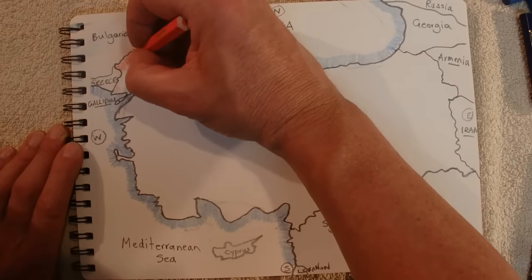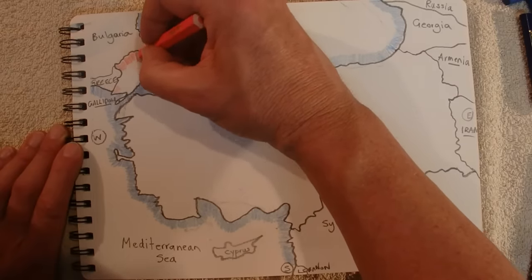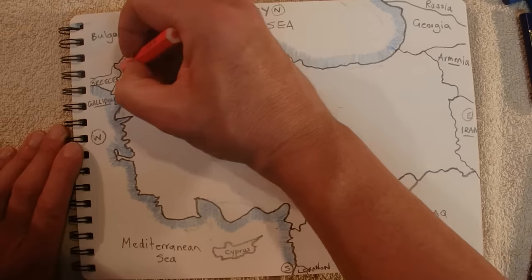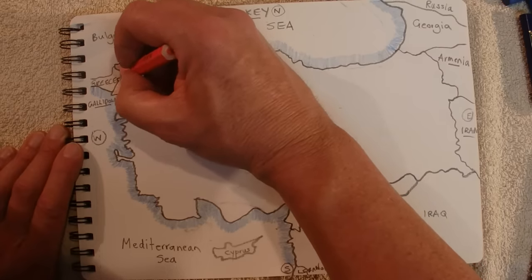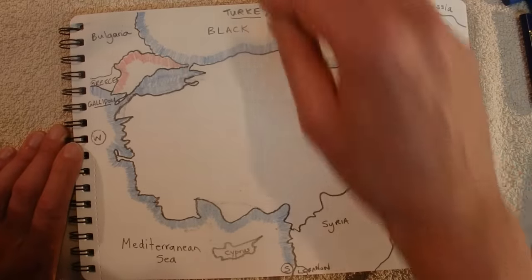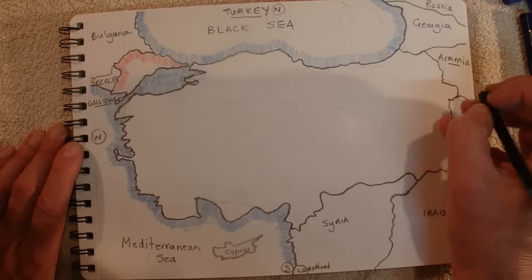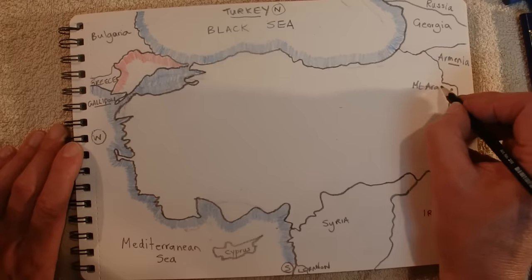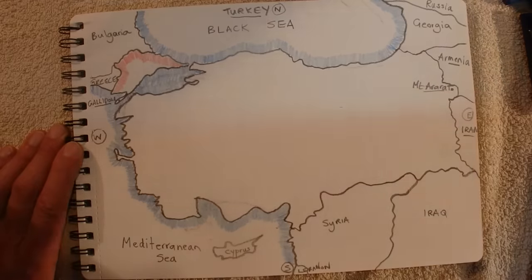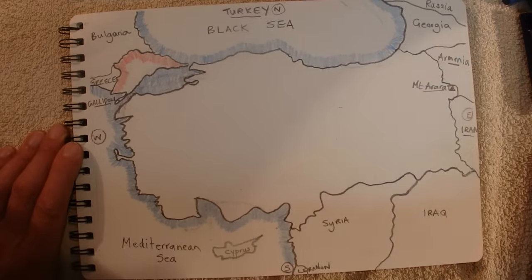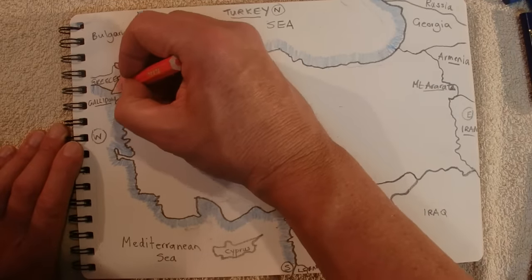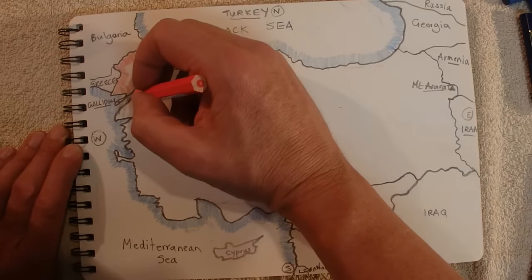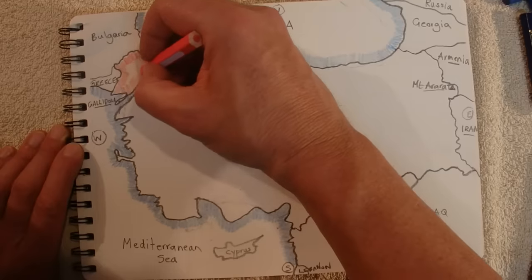Now it's red pencil time and it's time to start colouring in Turkey. Now what are some other interesting things — over here I'll write it in now — I think it's about there: Mount Ararat, which I should draw as a little triangle I suppose because it's a mountain. And that's the highest mountain in Turkey.